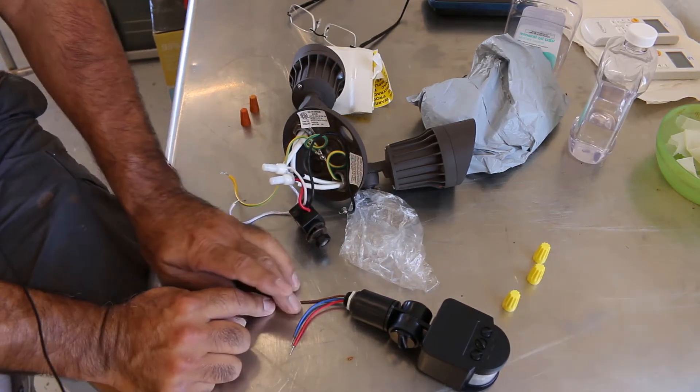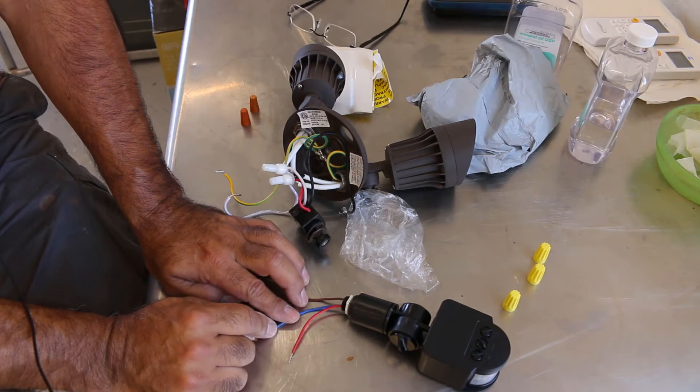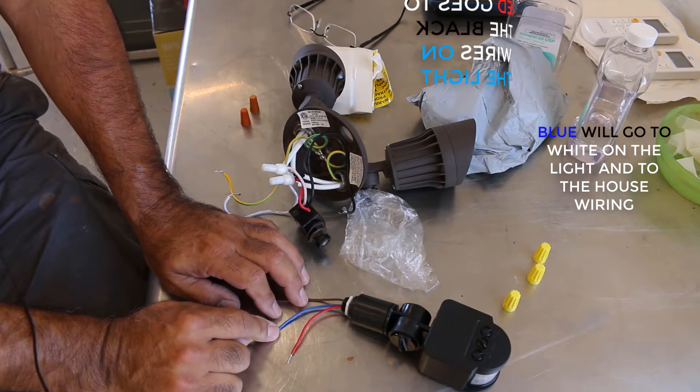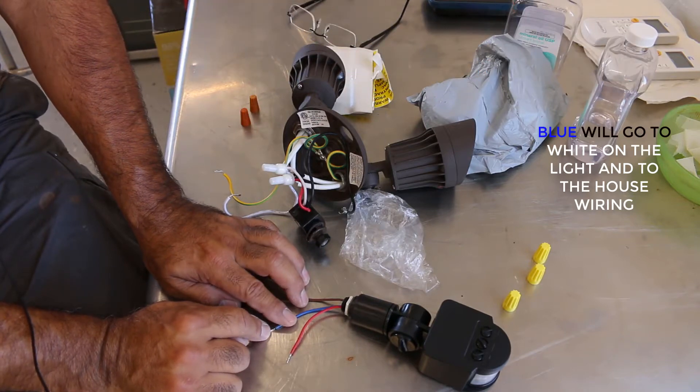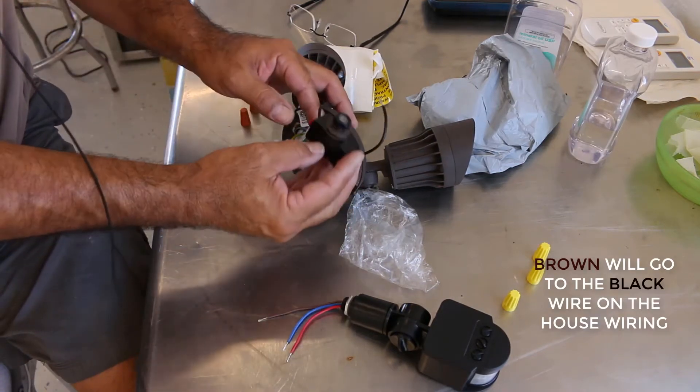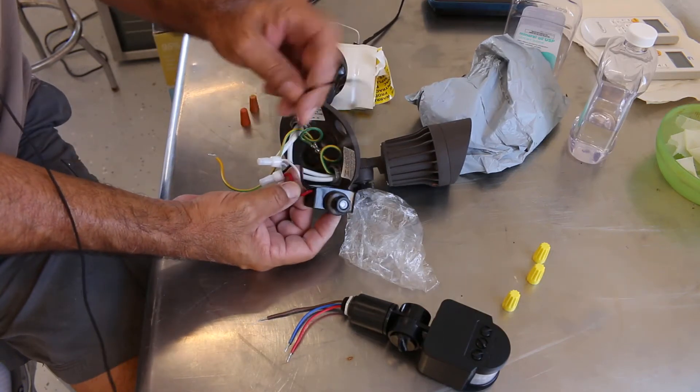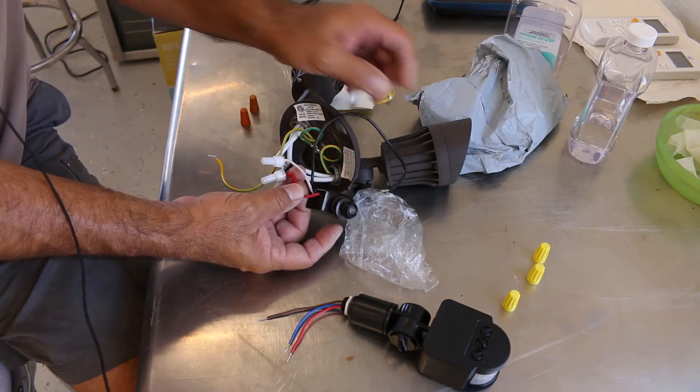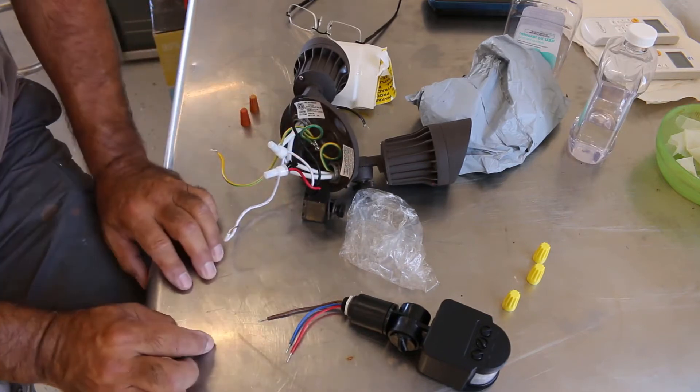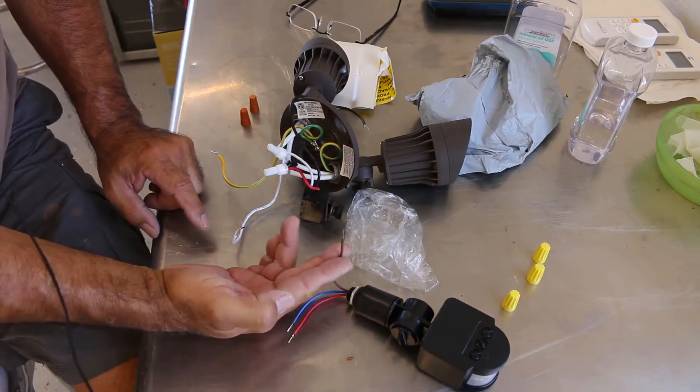Brown here is going to go to the wiring on the house, the hot wire, the black wire. Then you've got your blue and your red. Red is going to go to black on the light fixture. Blue is going to go to common or white on the light fixture. Right now we have a photoelectric eye with conventional wires. Black goes to your house wire, that's your hot. White goes to white and red goes to black. Red is going to go to black, blue is going to go to white, and brown will go to your house wire.